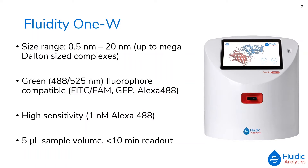The size range the Fluidity 1W is able to measure is between 0.5 nm to 20 nm. This range covers most small molecules and dipeptides all the way up to approximately 15 megadaltons, so almost all the protein species that might be found in a cell. It is compatible with green fluorophores including FITC, GFP, or Alexa 488 equivalent dyes. High sensitivity means that KD values for binding interactions in the picomolar range can be measured. Importantly, these measurements are carried out fully in solution with no surface fixing, using just 5 microlitres per sample.